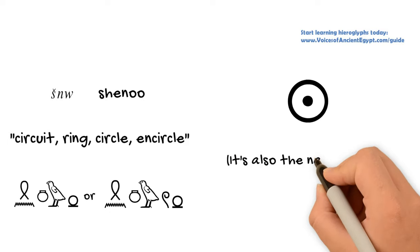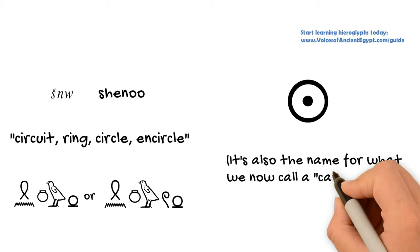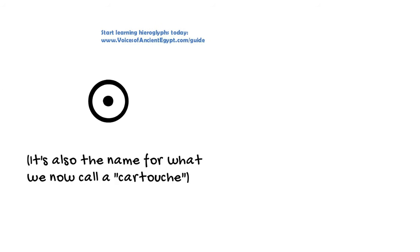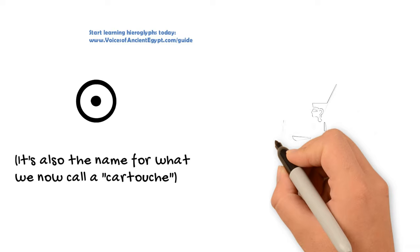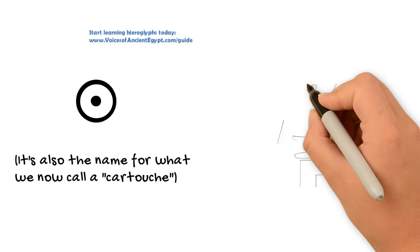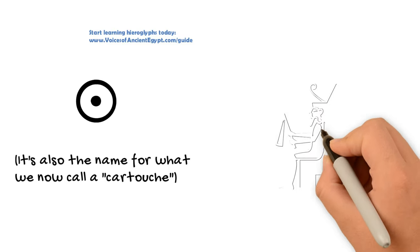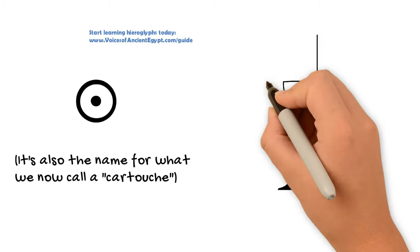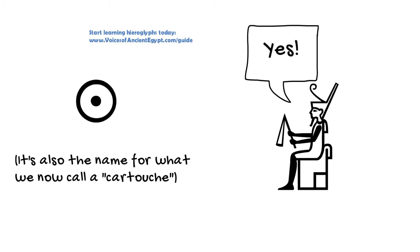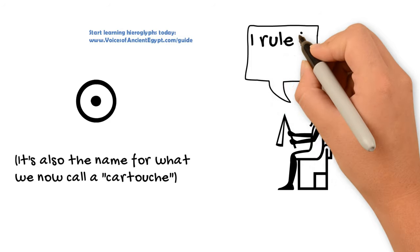And in addition to the solar association, it also had a kind of protective association as well. Now, because of symbolizing all of that the sun encircles each day, the shen ring came to refer to the king's rule over everything that the sun encircled. In other words, the whole world.